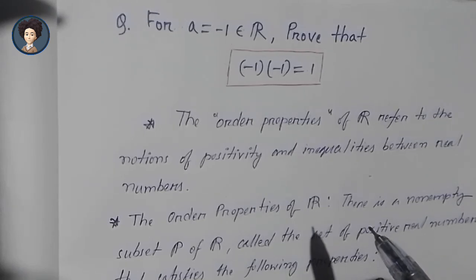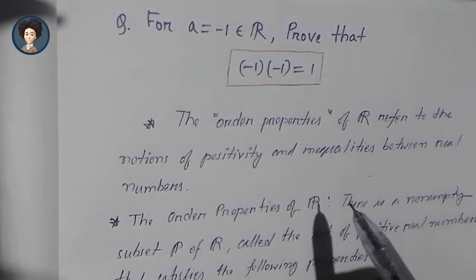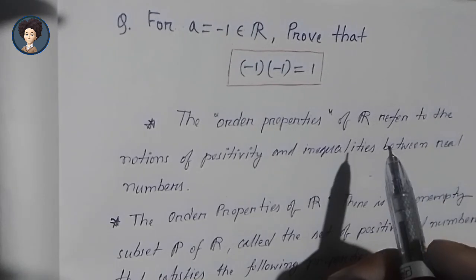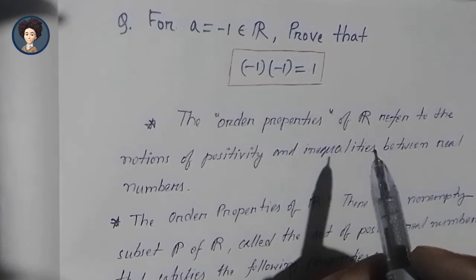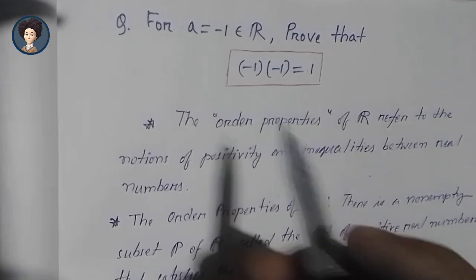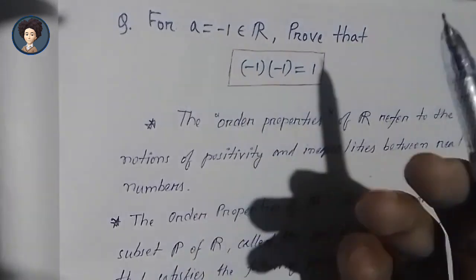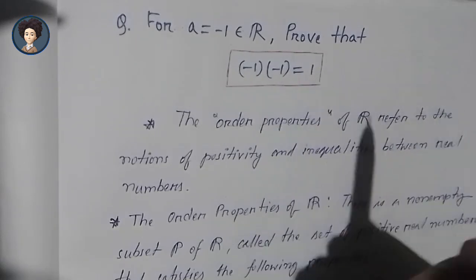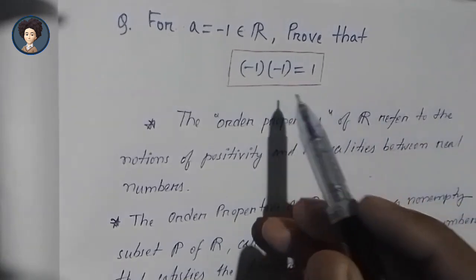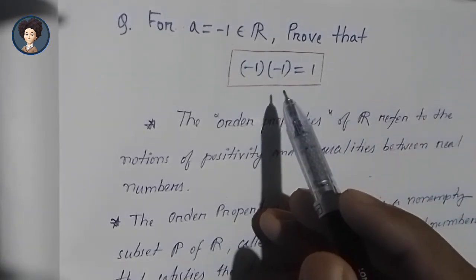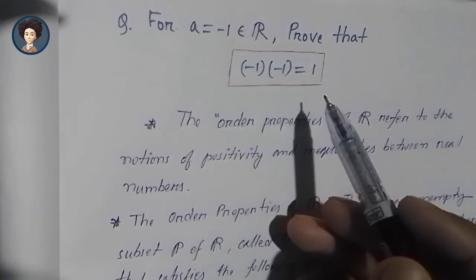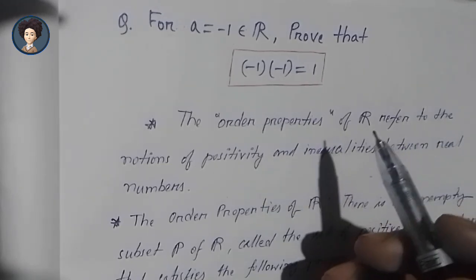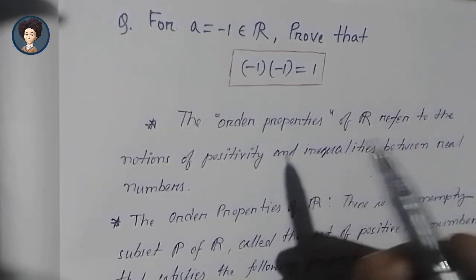Hello guys, today we are going to discuss an interesting question. For A equals minus one, which belongs to the real numbers, we need to prove that minus one times minus one equals one.